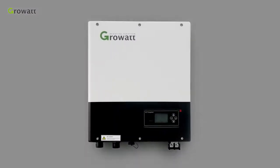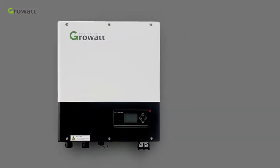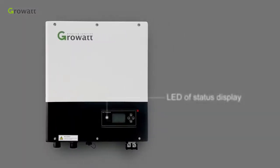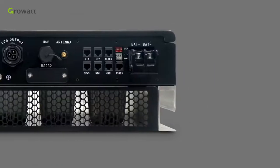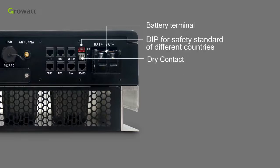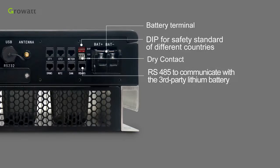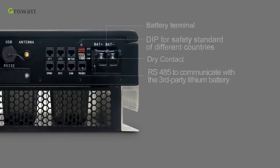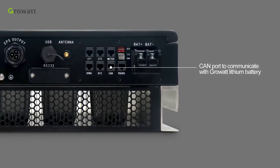Overview the device. We can learn about the main structure of inverter. LED of status display, LCD screen, function button, battery terminal, DIP for safety standard of different countries, dry contacts, RS485 to communicate with a third-party lithium battery, CAN port to communicate with GrowWatt lithium battery, meter input terminal.